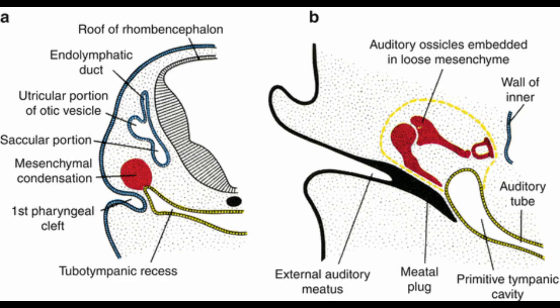From the distal portion of the tubotympanic sulcus, the tympanic cavity develops, dividing anatomically into an upper attic and a lower atrial chamber, gradually surrounding the ossicles and their attachments. The Eustachian tube forms from the proximal portion of the tubotympanic sulcus and shows most growth during weeks 16 to 28.